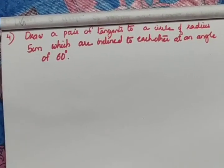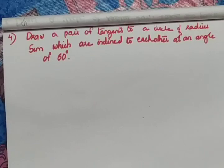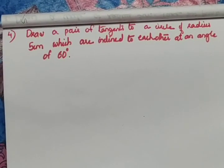Next question, draw a pair of tangents to a circle of radius 5 cm which are inclined to each other at an angle of 60 degree.